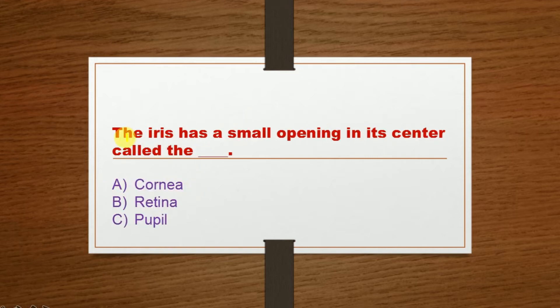Next question: The iris has a small opening in its center called the dash. Option A: Cornea, Option B: Retina, Option C: Pupil. The correct option is Option C: Pupil.